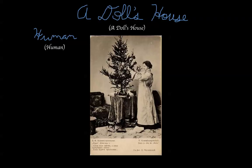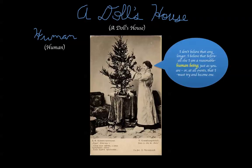Ibsen says this play is about what it means to be human. And Nora is not treated as an equal human being in this play — she can't sign for a loan, first of all, because she's a woman. Torvald says to her as she is leaving, 'Before all else, you are a wife and a mother.' And Nora replies, 'I don't believe that any longer. I believe that before all else, I am a reasonable human being, just as you are, or at all events, that I must try and become one.'